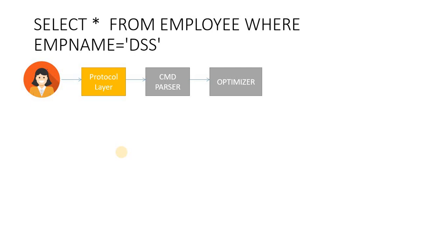Once the optimizer has evaluated all options, it selects the best execution plan from multiple candidate execution plans. After the optimizer selects the best plan, we move to the execution phase. In the execution phase, we reference back to what the Command Parser validated, and we execute our selected execution plan.